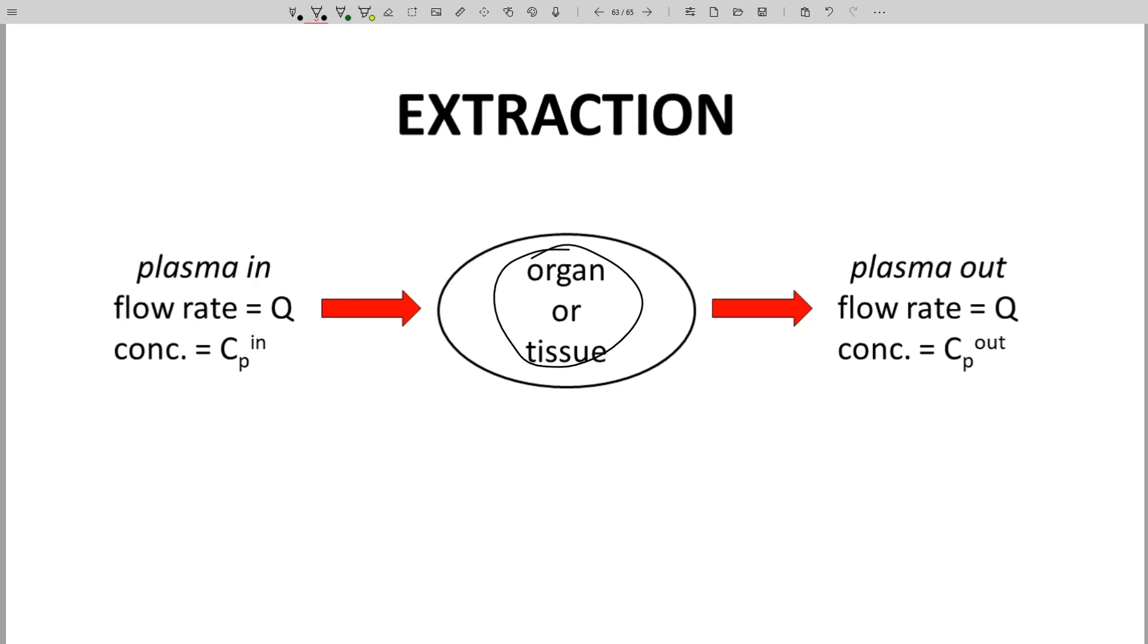Blood, more specifically plasma, enters the organ at a flow rate of Q, which is in milliliters per minute, and a concentration Cp in.